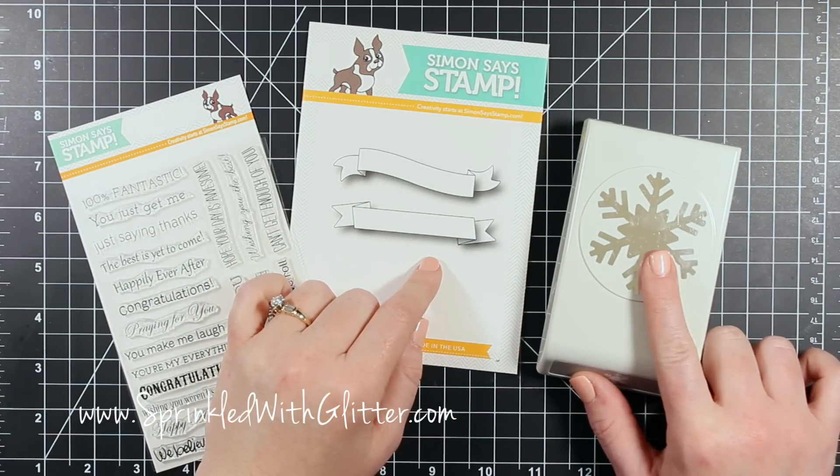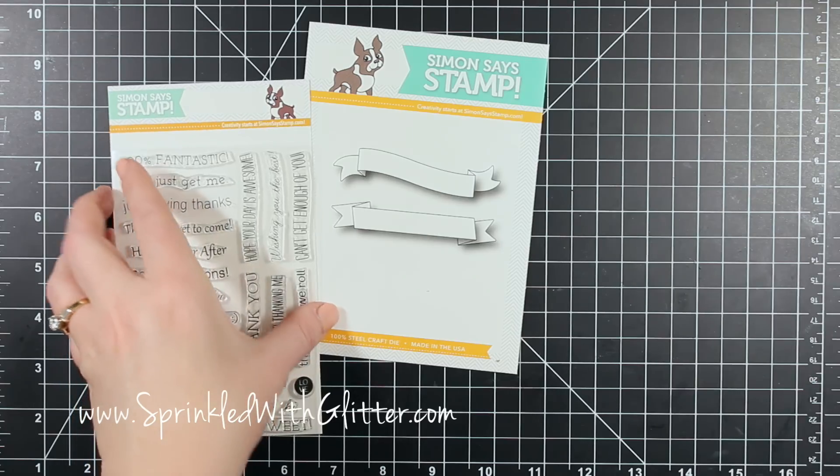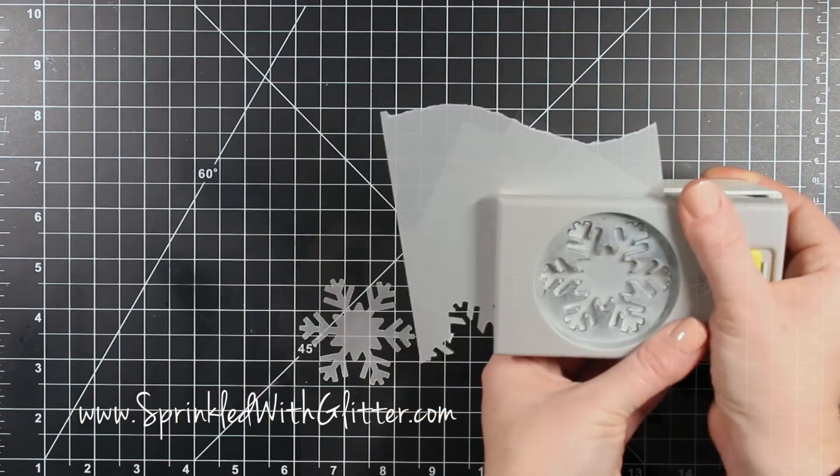The stamp set and the die are from Simon Says Stamp. Those are the Tilted Banner Sayings and the Tilted Banner Die Set.